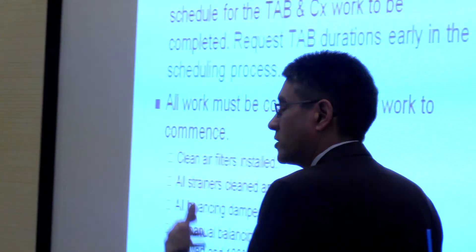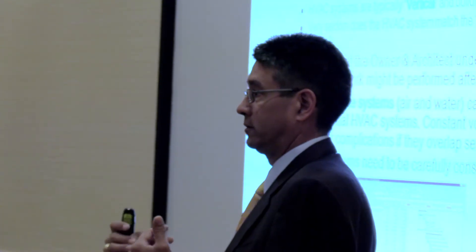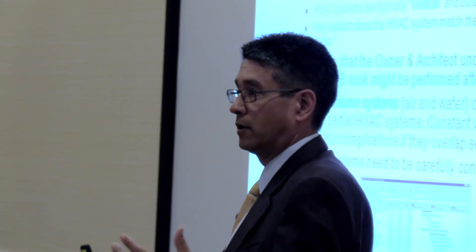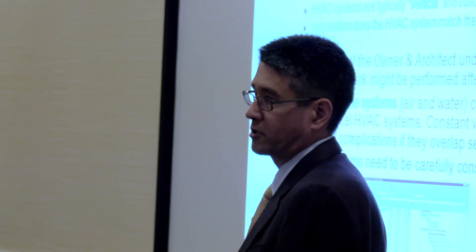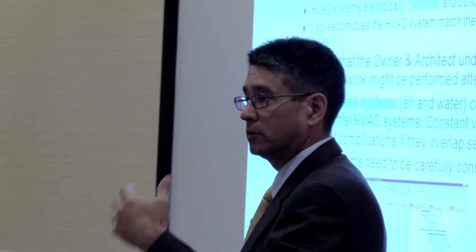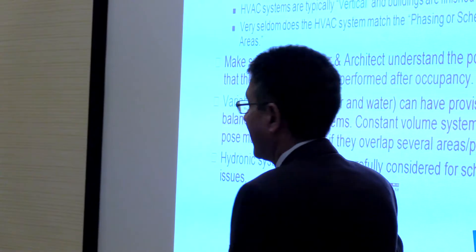Always talk schedule. The hardest thing most GCCMs and owners don't understand is that the majority of our work is done by system, not by area. Most HVAC systems are vertical, not horizontal like a building floor. They phase out a building by floor, but your air handler is sitting up top feeding each floor — on a constant volume system, how do you do a floor at a time if they haven't finished out the other floors? Getting involved early on scheduling and saying: hey, you're phasing the job, how are you going to do that?